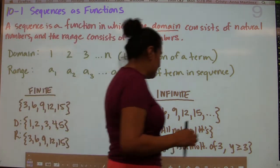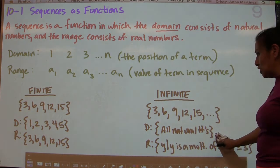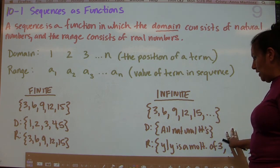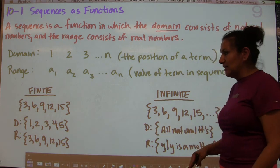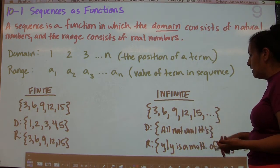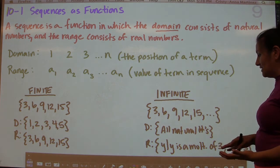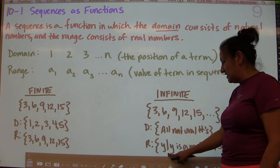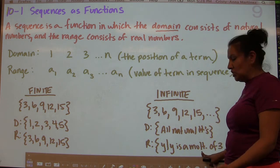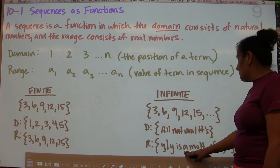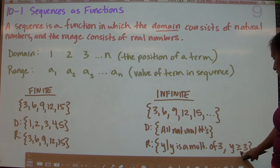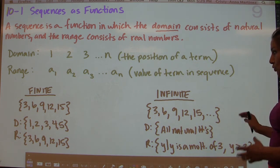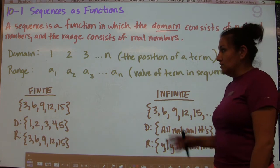In the case of an infinite sequence, the domain would be all natural numbers — you could write 1, 2, 3, 4, 5, dot dot dot, or just write 'all natural numbers.' For the range, instead of listing all numbers, you could describe it as a condition using set-builder notation: all y's such that the y values are multiples of 3 starting with 3, so y greater than or equal to 3. That's how you describe an infinite sequence as opposed to a finite sequence.